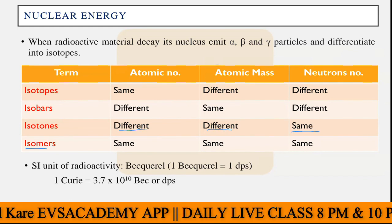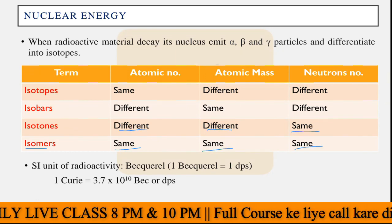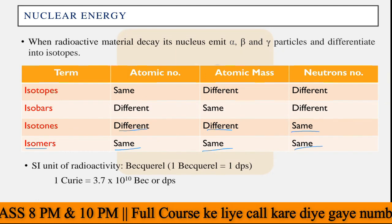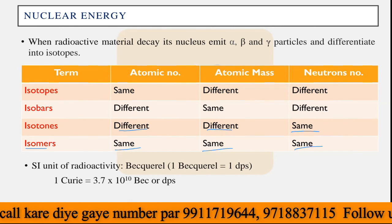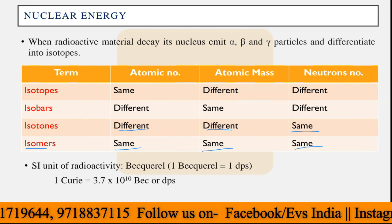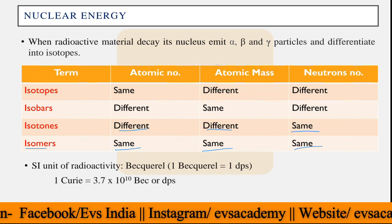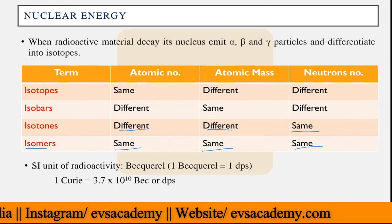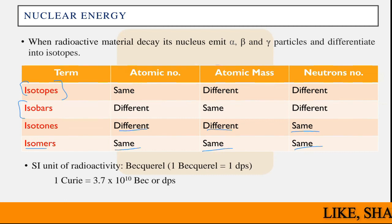Then we have isomers. In isomers, everything is the same: same atomic number, same atomic mass, same neutron number. But some other quantity can be different — for example, the dipole moment can be different, or the light reflectance direction could be different, one reflecting to the left and another to the right. These are isomers having the same atomic number, atomic mass, and neutron number. All four terms — isotopes, isobars, isotones, and isomers — are important basics of nuclear energy.